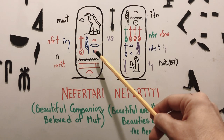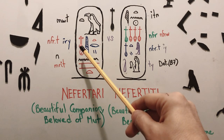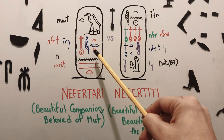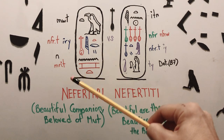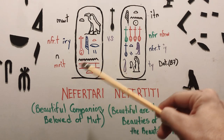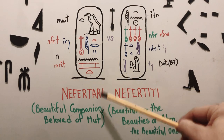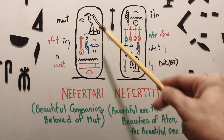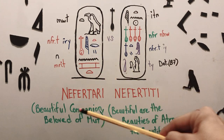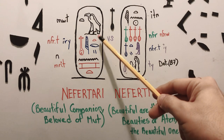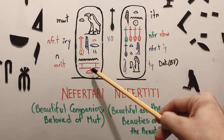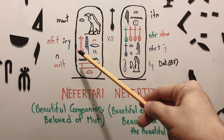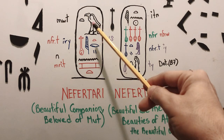Up here is the cartouche, so we can see it starts right over here. Neferet — the feminine — Neferet, Eri, Neferetiri, or we pronounce it as Nefertari, Neferetari. See how it divides? Ari — it's pretty much the same, but we pronounce it differently. So Nefertari, which means beautiful companion, beloved of Mut.